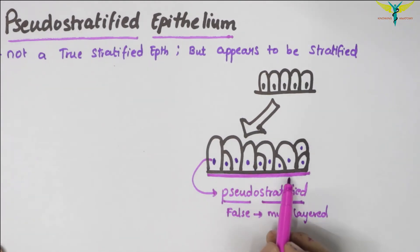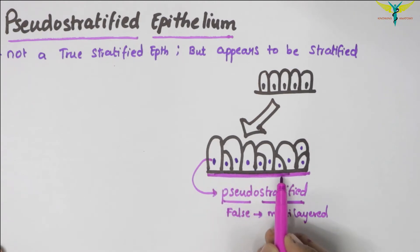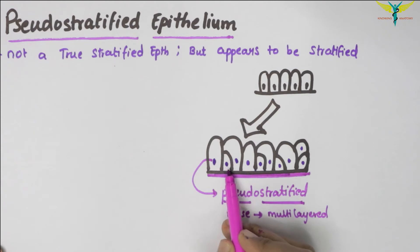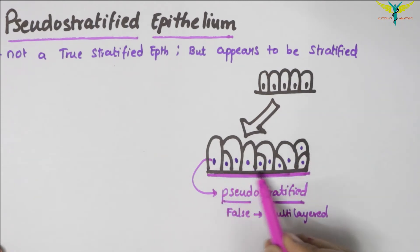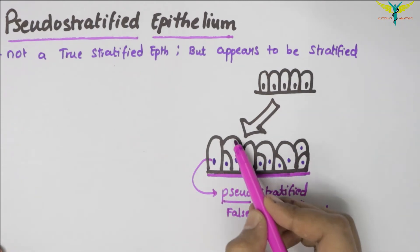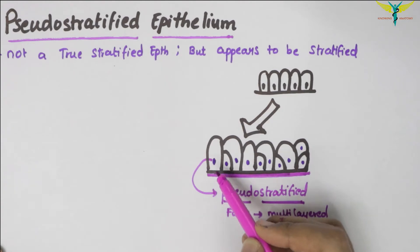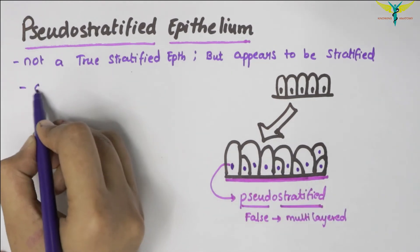All the cells of this epithelium are attached to the basement membrane, but these cells are of different heights. Some cells are short and basal, while others are tall columnar cells. This epithelium may bear cilia — that is the ciliated pseudo-stratified epithelium.